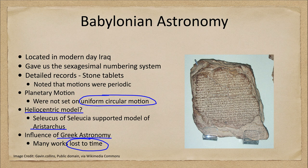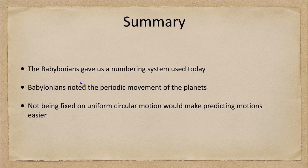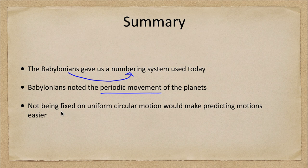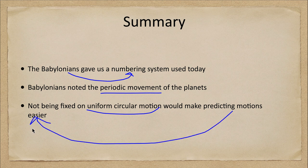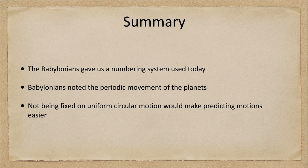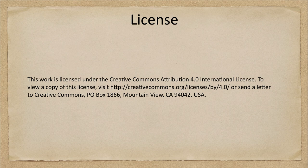To summarize this introduction: we talked about the Babylonians giving us the numbering system we still use today for things like time and angles. They noted periodic movements of the planets through the sky, and they were not fixed on uniform circular motion, which makes predicting these motions much easier. Over the coming two lectures we will look at a couple more parts of this in more detail. This concludes the introduction to Babylonian astronomy — we'll be back next week for another study in the astronomy of other cultures. Have a great day, everyone, and I will see you in class.